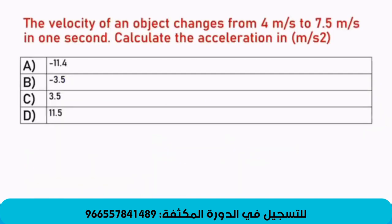Now, let's see. Really? How is that? Velocity of an object changes from 4 to 7.5 in one second. Calculate the acceleration. Now, if we notice that we are given some data, 4 meter per second to 7.5 meter per second.